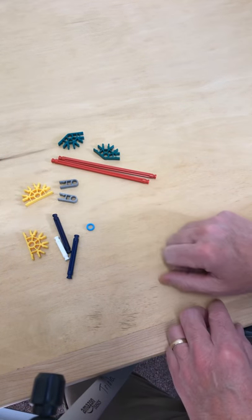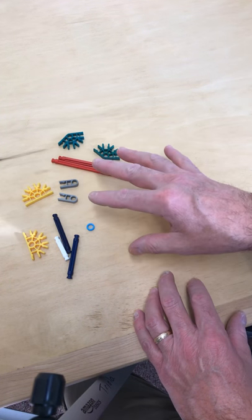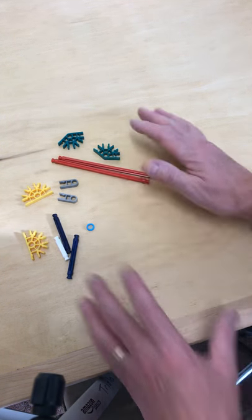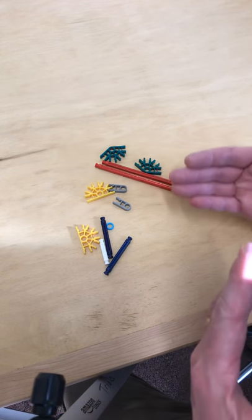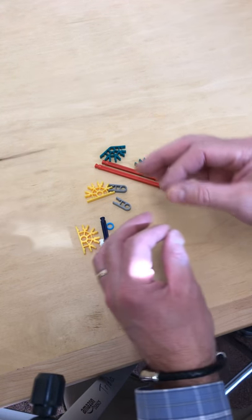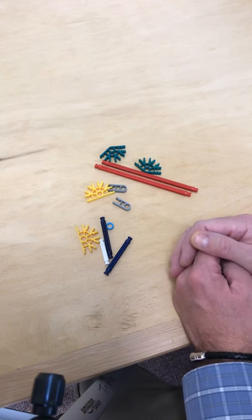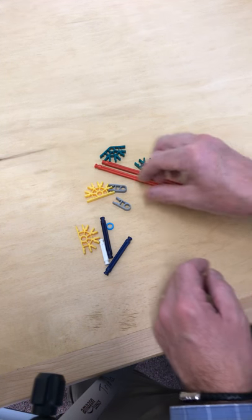You'll also need two dark gray connectors and a blue spacer. You can improvise these parts depending on your kit and what you have available. I like to throw in the blue spacer because it adds a little bit to the actual quality of the design.